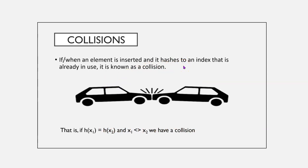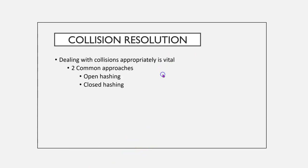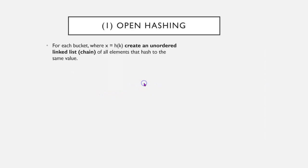If and when an element is inserted, and it hashes to an index that is already in use, it's known as a collision. That is, if h of x1 equals h of x2, and x1 doesn't equal x2, we will have a collision. There are two common results for dealing with collisions, open hashing and closed hashing.